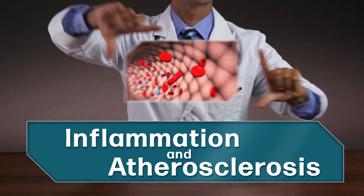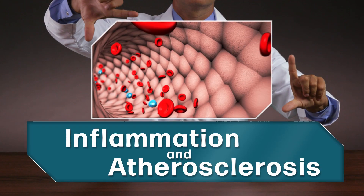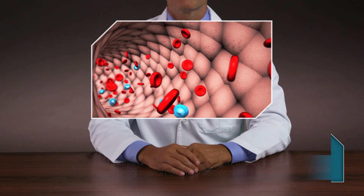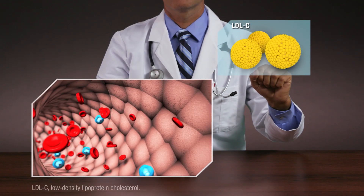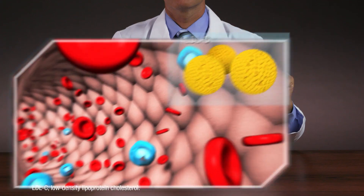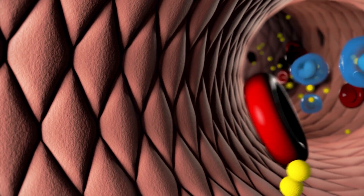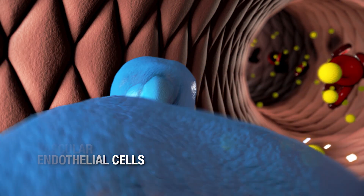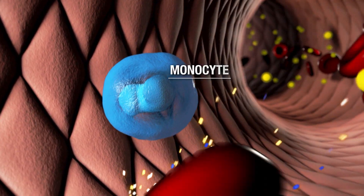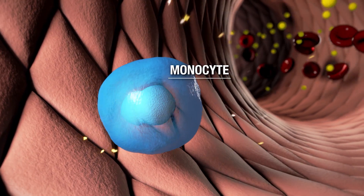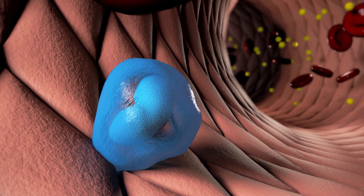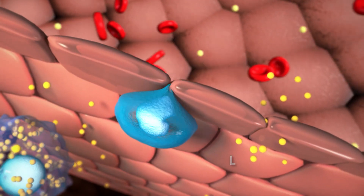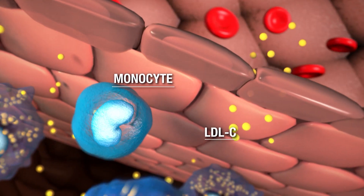Atherosclerosis is a progressive process in which inflammation plays an important role. In the presence of inflammatory stimuli such as elevated LDL-C, atherosclerosis develops as vascular endothelial cells express adhesion molecules that capture monocytes on the arterial wall. At the same time, changes in the permeability of the arterial wall allow the entry and retention of LDL-C particles and monocytes.